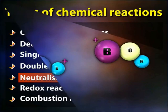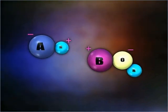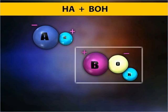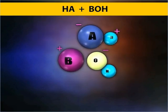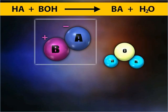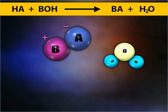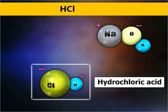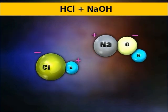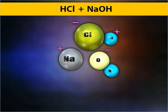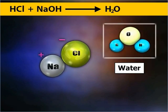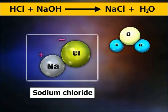Neutralisation reactions are double displacement reactions that take place between an acid and a base forming water and a salt. For example, hydrochloric acid and sodium hydroxide base react to form water and sodium fluoride.